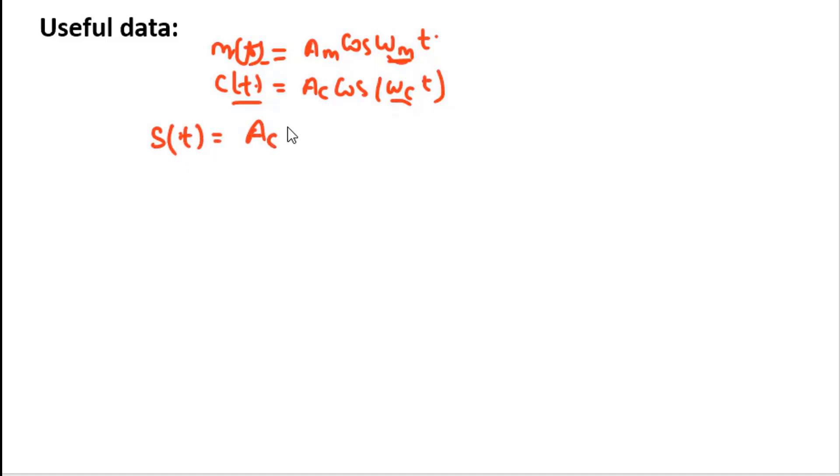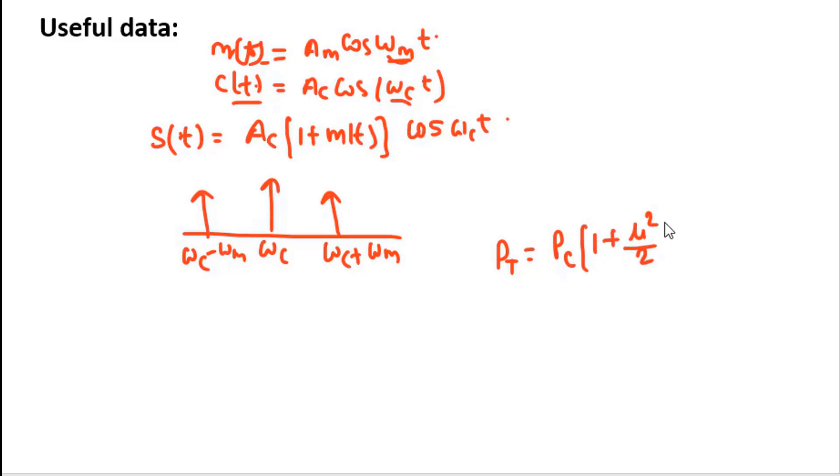We can write the amplitude modulated signal s(t) = Ac[1 + m(t)]cos(ωc t). In the frequency spectrum, there will be one carrier at ωc, upper sideband at ωc + ωm, and lower sideband at ωc - ωm. The total transmitted power in this amplitude modulated signal is Pt = Pc(1 + μ²/2), where μ is the modulation index, given by μ = Am/Ac.